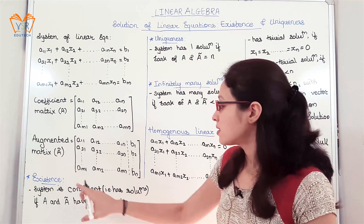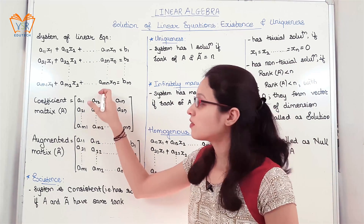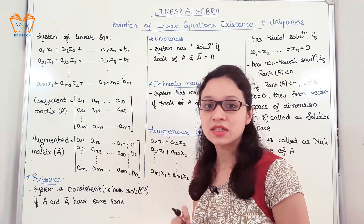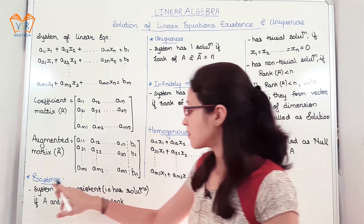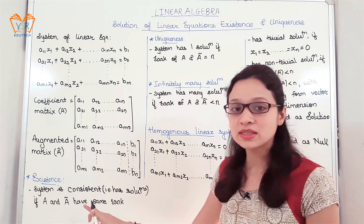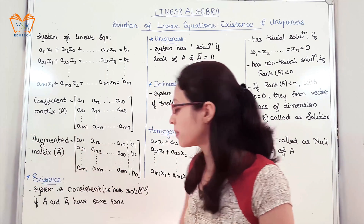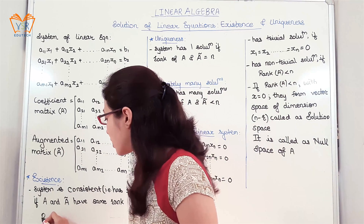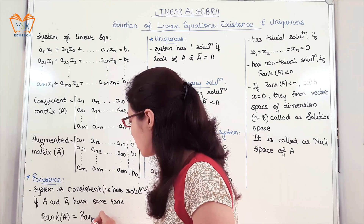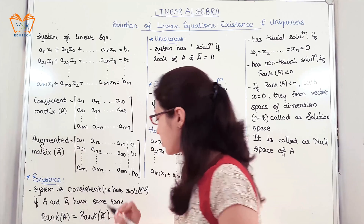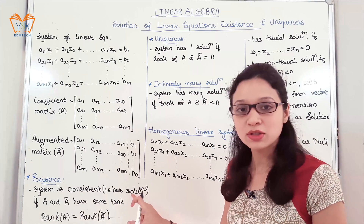Next, the terms existence, uniqueness, and infinitely many solutions tell us whether the system of linear equations has a solution, whether they have one solution, or whether they have many solutions. A system is called a consistent system if it has a solution and if the rank of the coefficient matrix and augmented matrix are equal — that is, rank of A equals rank of the augmented matrix. A system is called an inconsistent system if it does not have any solution.